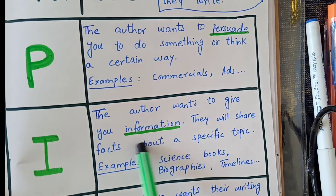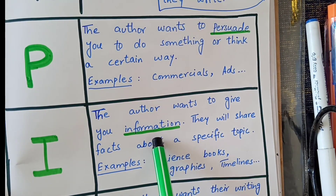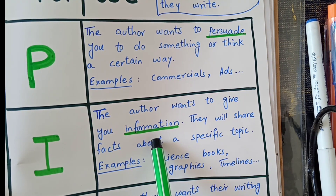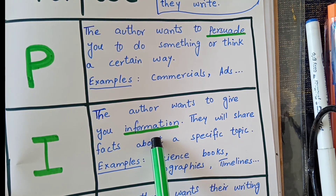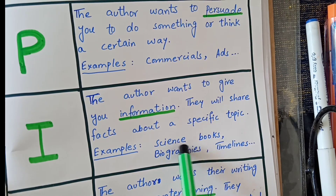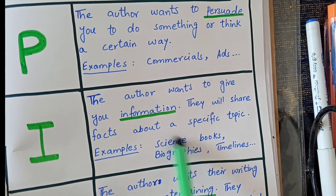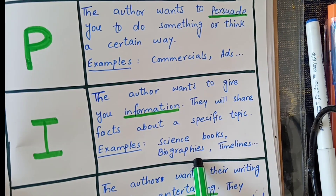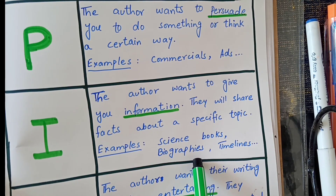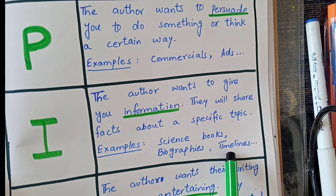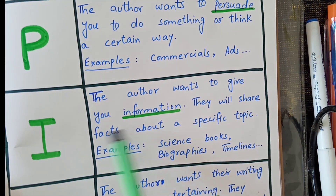The second is I, which stands for information. The author wants to give you information — facts or truth about a specific topic. Examples include science books, where the author gives information based on facts or truth, as well as biographies and timelines, which also depend on true and factual information.